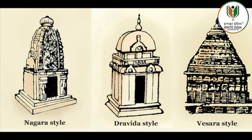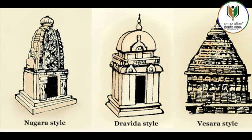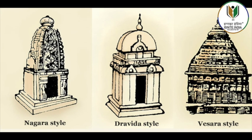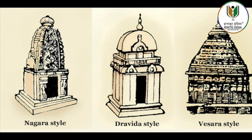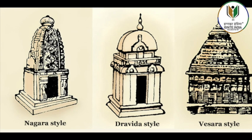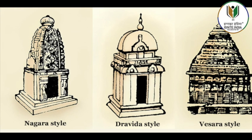Their early buildings are generally assumed to have been rock-cut, while the later ones were structural. The early buildings are generally attributed to the reign of Mahendravarman I, a contemporary of the Chalukya king Pulakesi II of Karnataka. Narasimhavarman I, also known as Mamalla, inaugurated most of the building works at Mahabalipuram, which came to be known after him as Mamallapuram.